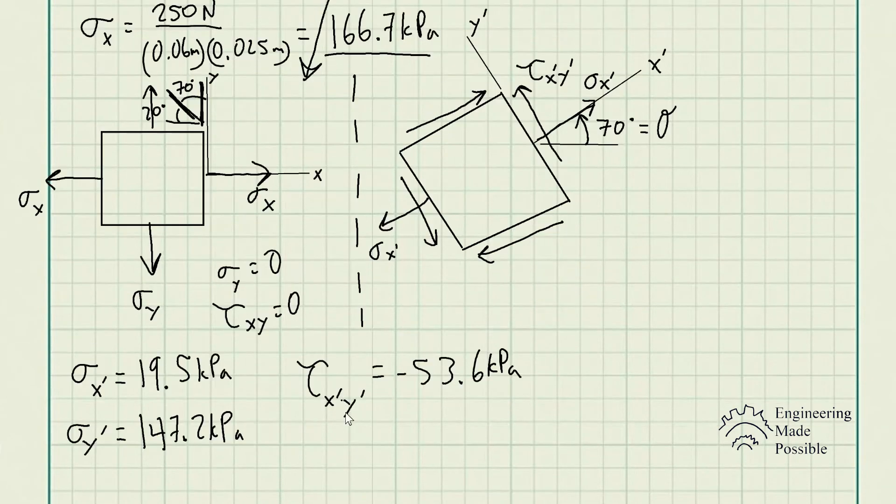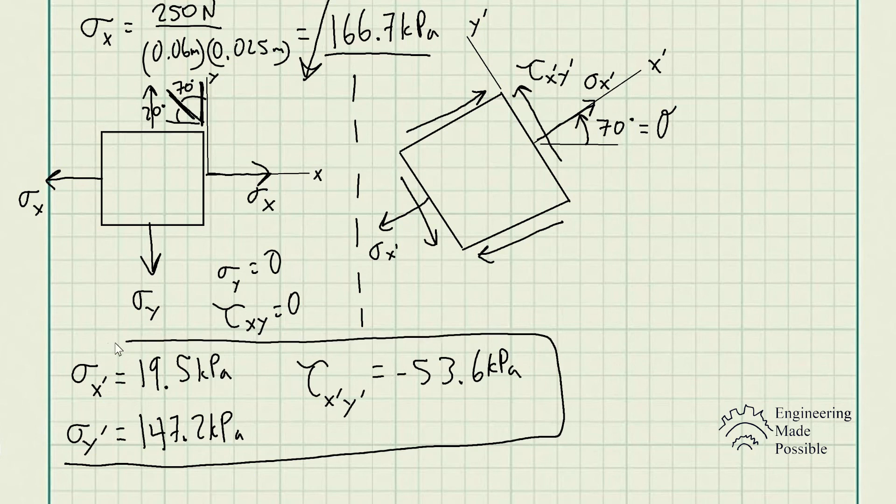After plugging in all the values into our equations, here are the normal stress and shear stresses acting on the element along the grains of the wood. This is something to keep a lookout for, because if you're just analyzing the normal stresses on the beam or wooden rod, you may believe it won't fail.